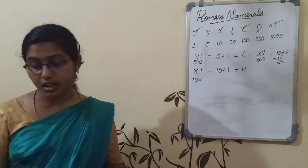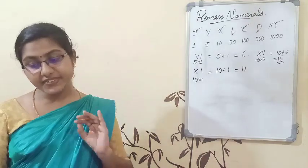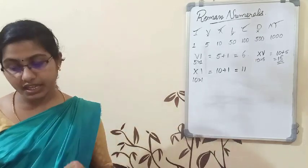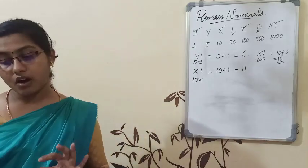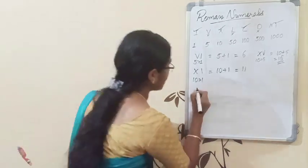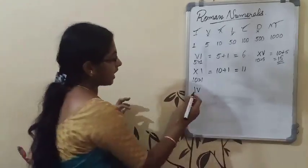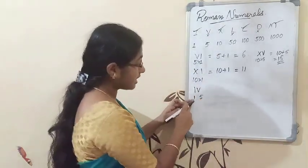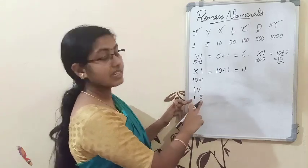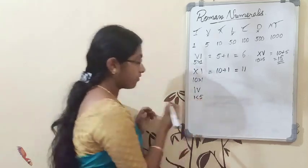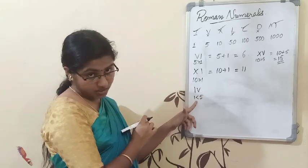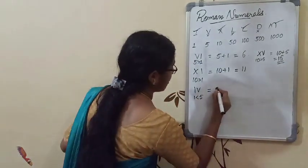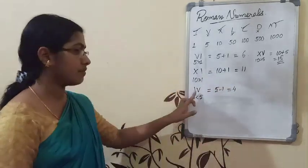The next rule: if the symbol of a smaller value is written to the left of the symbol of greater value, then the smaller value is subtracted from the greater value. For example, IV: I has value one, V has value five. Here, one is less than five, therefore we subtract: five minus one equals four. So IV means four in Hindu-Arabic numerals.